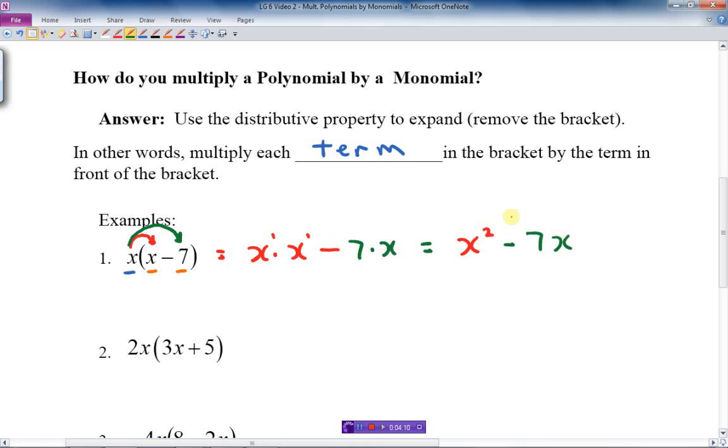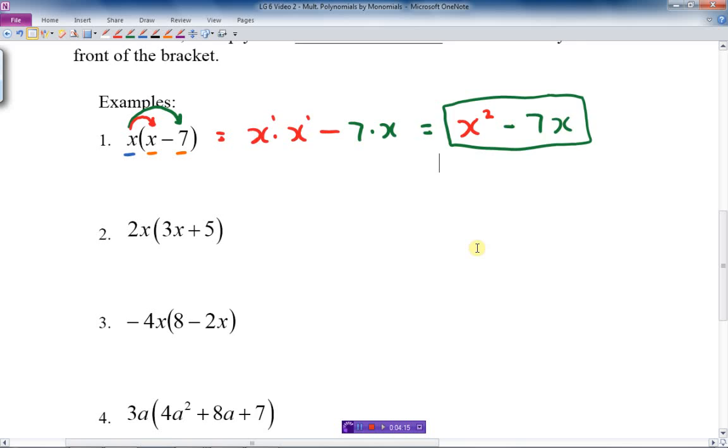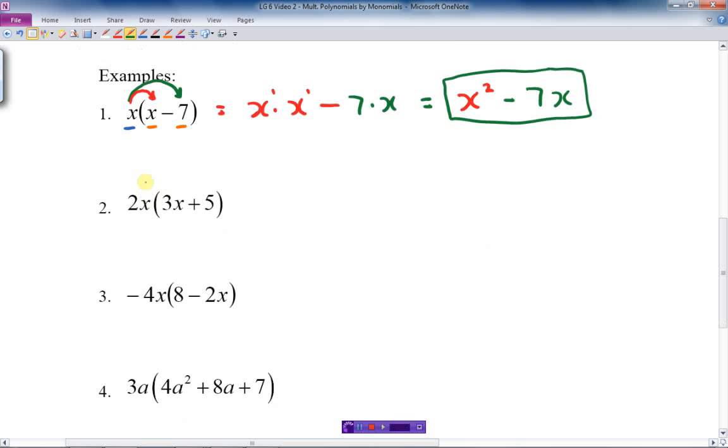Let's do another example: 2x times 3x plus 5. We can write this out: 2x times 3x plus 2x times 5.